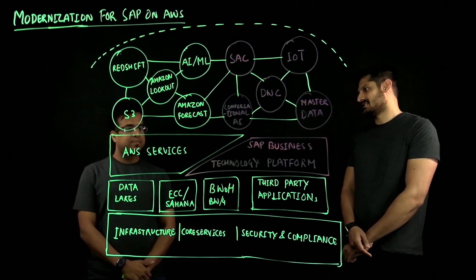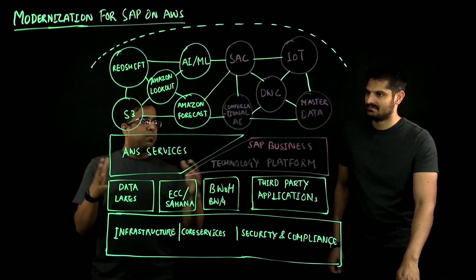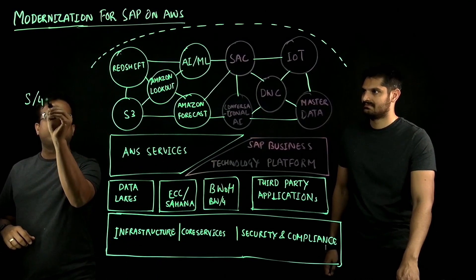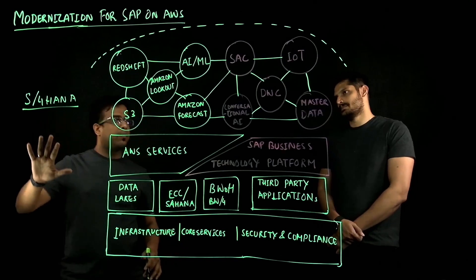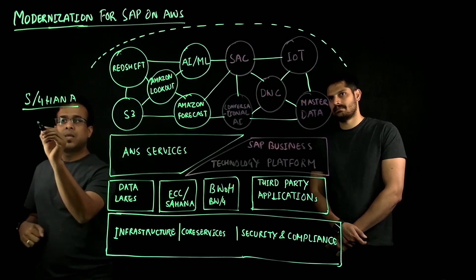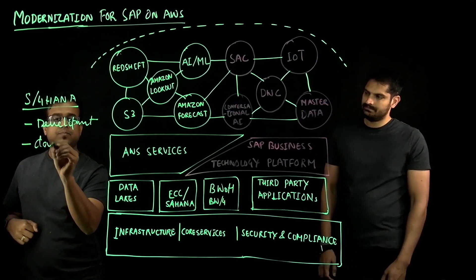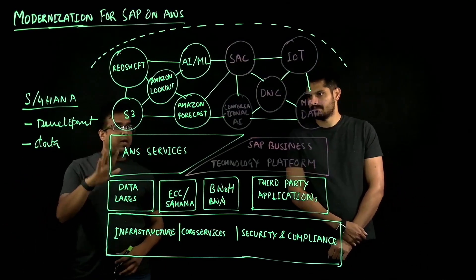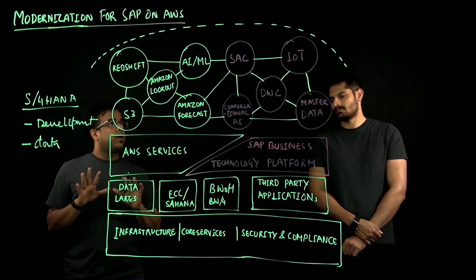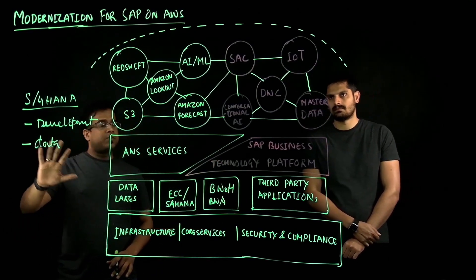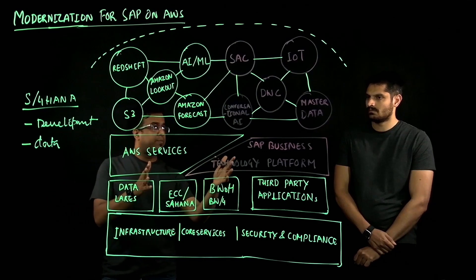What are the different areas where customers can modernize their business processes? I categorized this into three broader areas. First is simplifying their S4 HANA journey. Customers are currently looking for S4 HANA modernization, and in that journey there are two very important aspects: custom development and data. Customers can leverage the BTP platform on AWS — which runs exclusively on AWS — and also leverage master data quality management for their master data quality. Both these services run exclusively on AWS, helping simplify S4 HANA business transformation using BTP services.